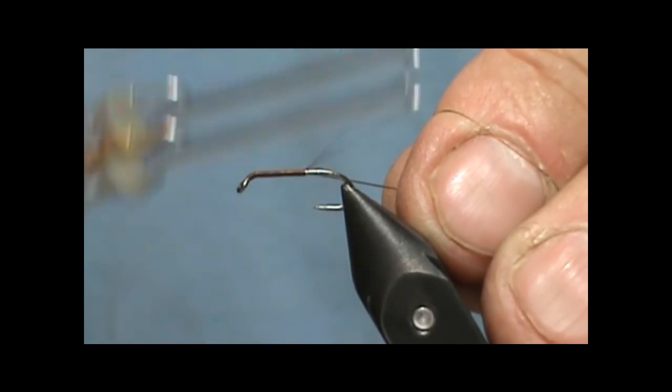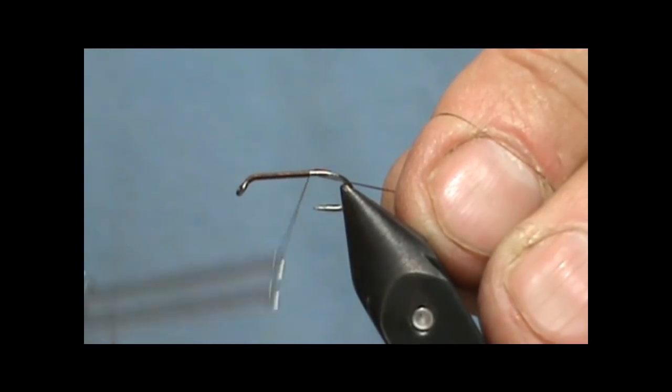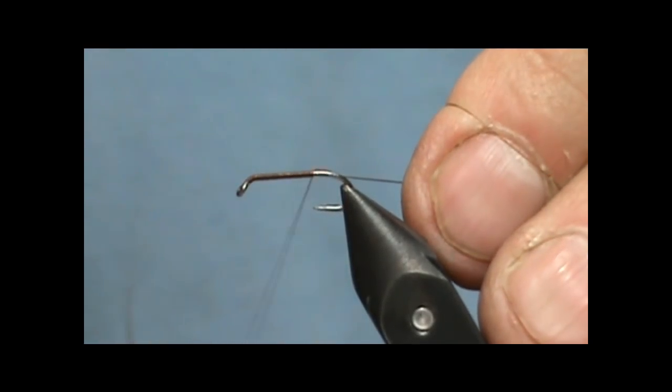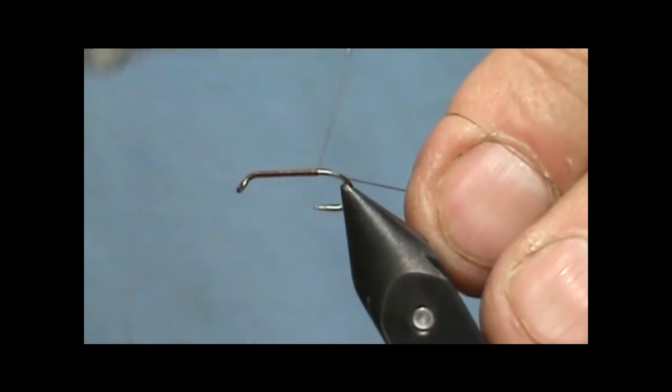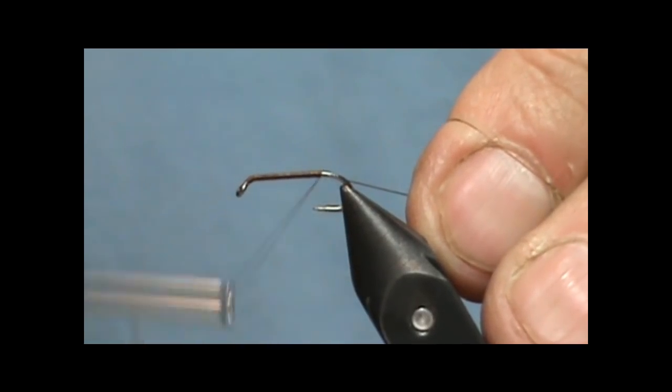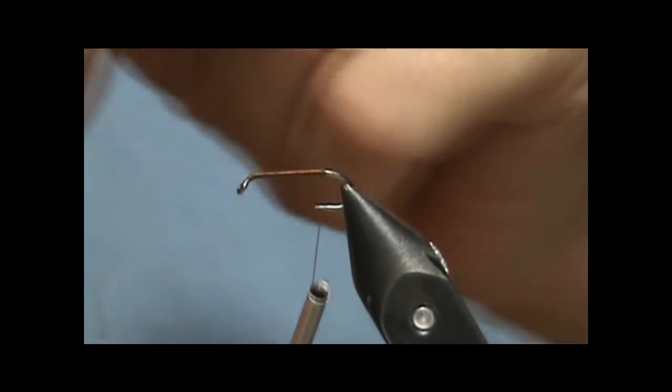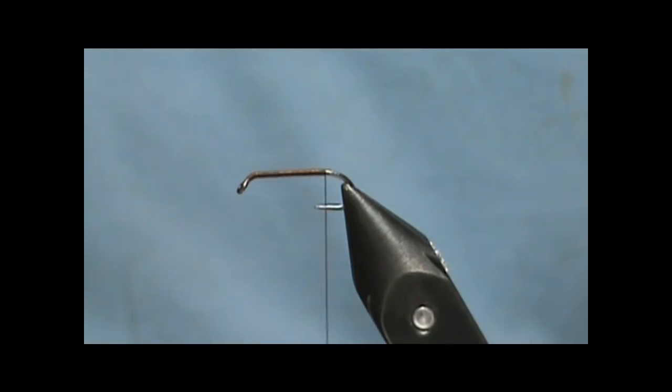So I'm going to make a fancy Prince wet version, no weight on it. It's just going to be a wet fly. I'll bring our thread back to where it starts to bend, or where the barb would be when the thread is hanging. This just happens to be a barbless hook.